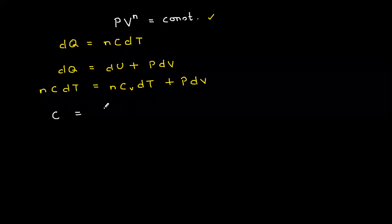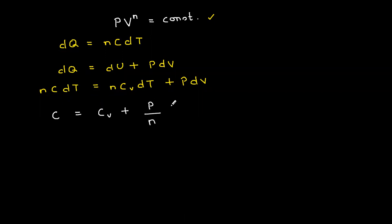Using this relation, the specific heat C equals Cv plus p divided by n times dV/dT. I'll leave it here and then see what else I can do.